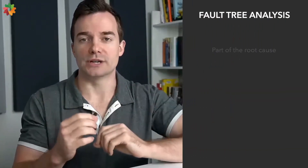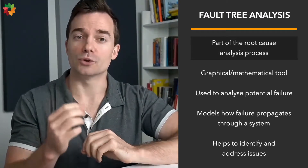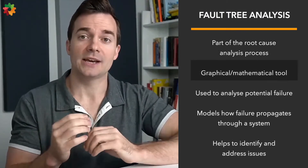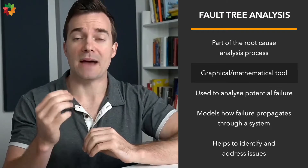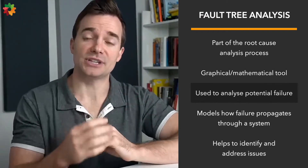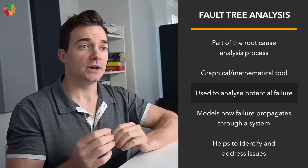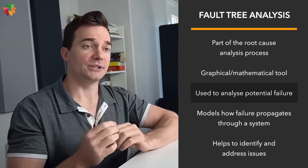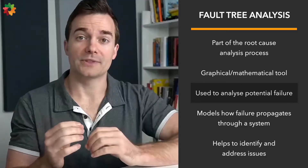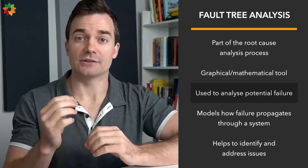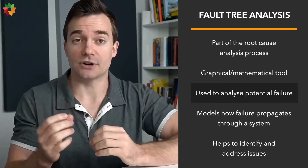So what is fault tree analysis? FTA is used as a part of the root cause analysis process. It's a graphical as well as a mathematical tool used to analyze the potential for failure for a machine or a system. The graphical elements used to model FTA are called fault trees. They are acyclical graphs that resemble the structure of a tree — that's where the name comes from.